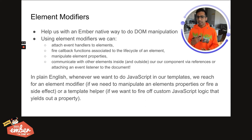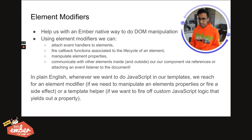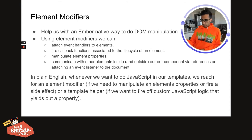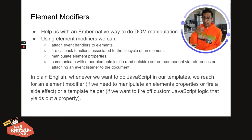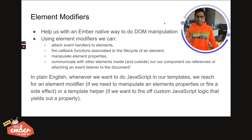In plain English, the big thing for beginners like myself is that if I want to do something JavaScripty inside of my template, I'll reach for an element modifier if I need to manipulate the attributes of an element dynamically, or if I need to fire off some side effect alongside an event — some mouse events or an input event like key down or a keystroke. And I'll use a template helper in the event I want to fire off some custom JavaScript logic that's going to yield out a property, like displaying a property in its correct date format.